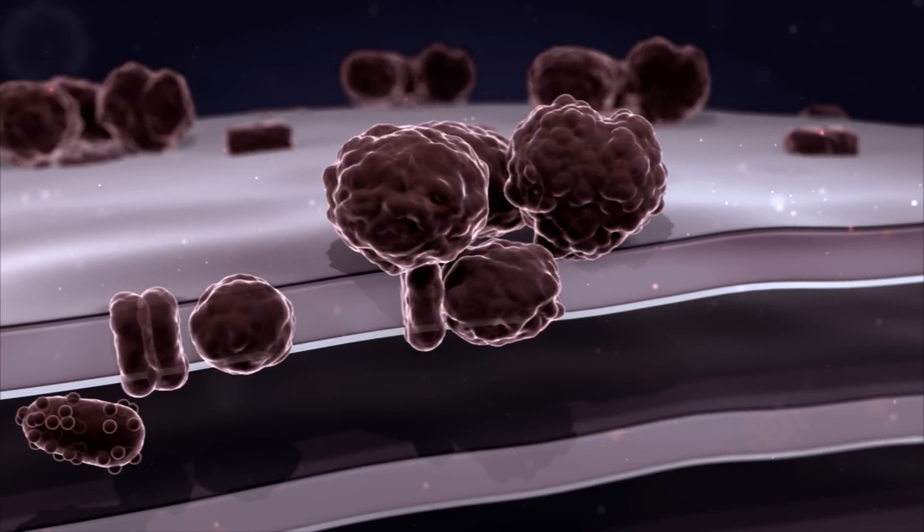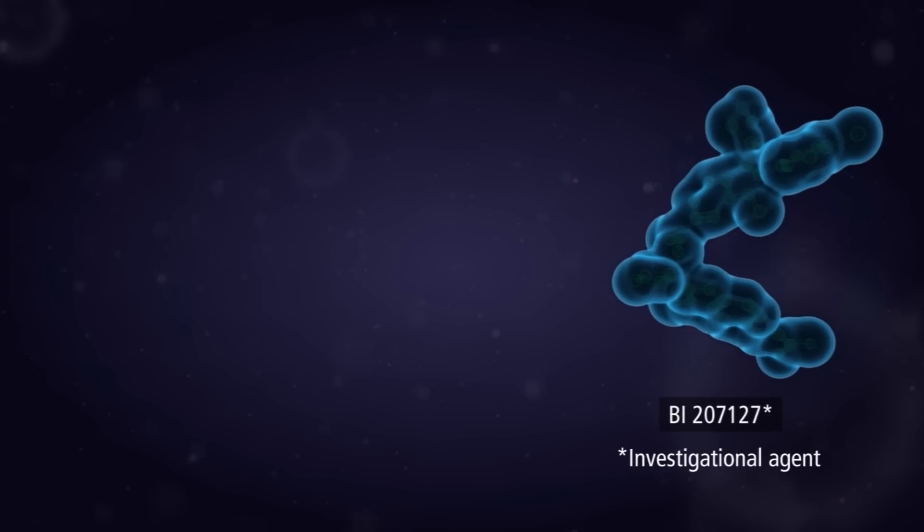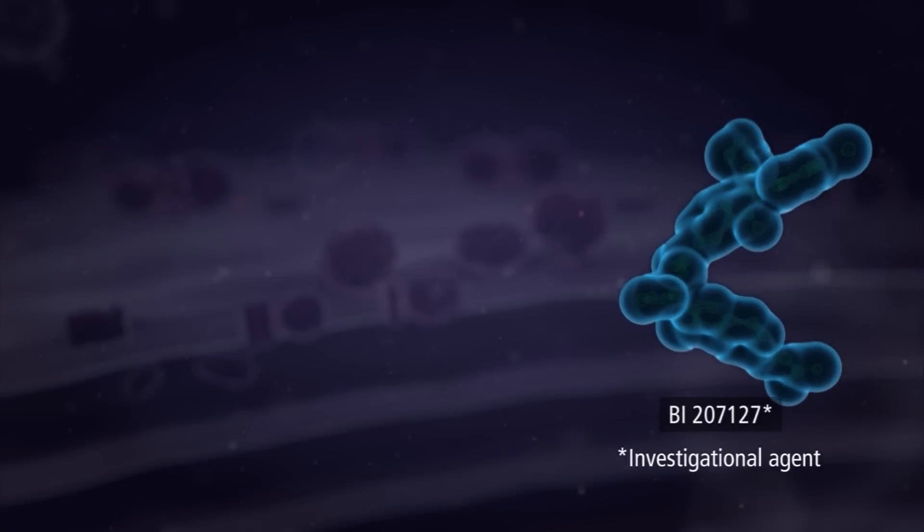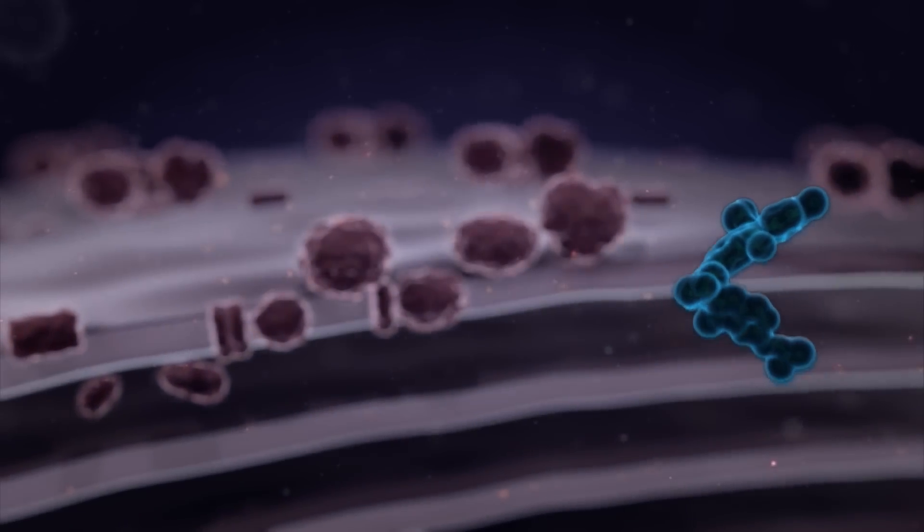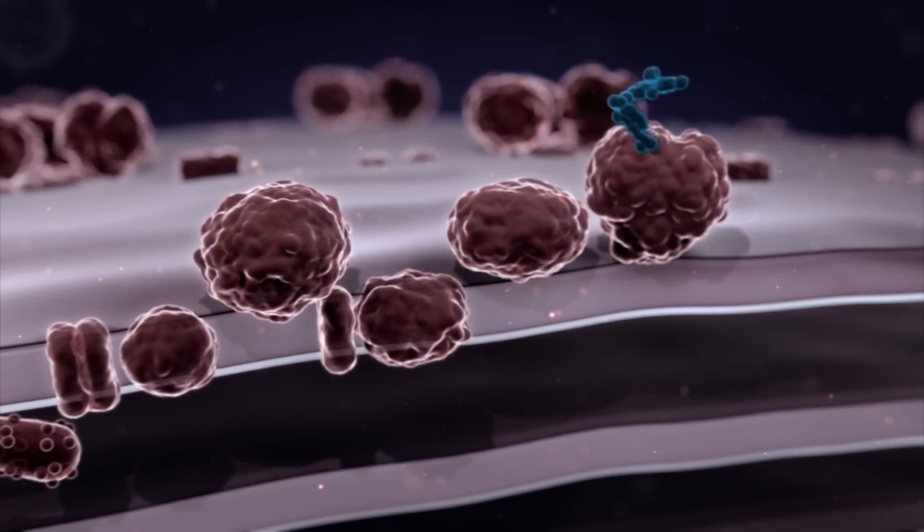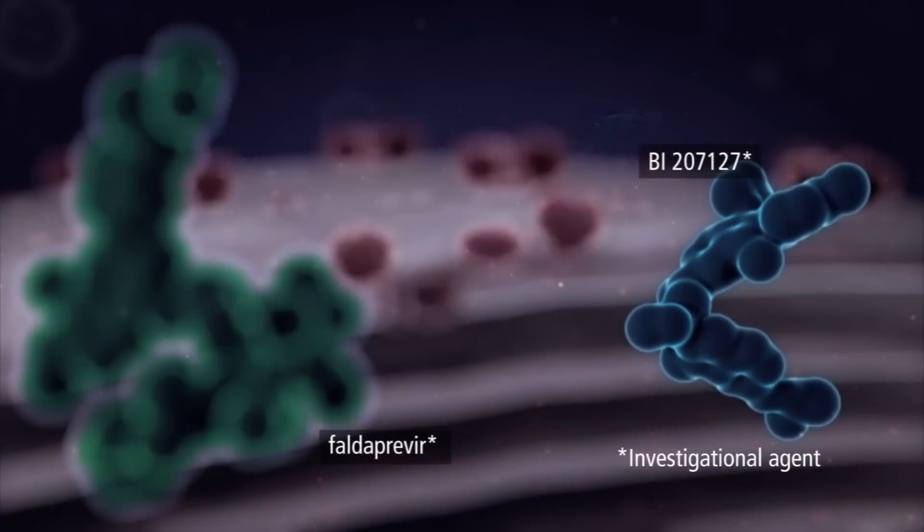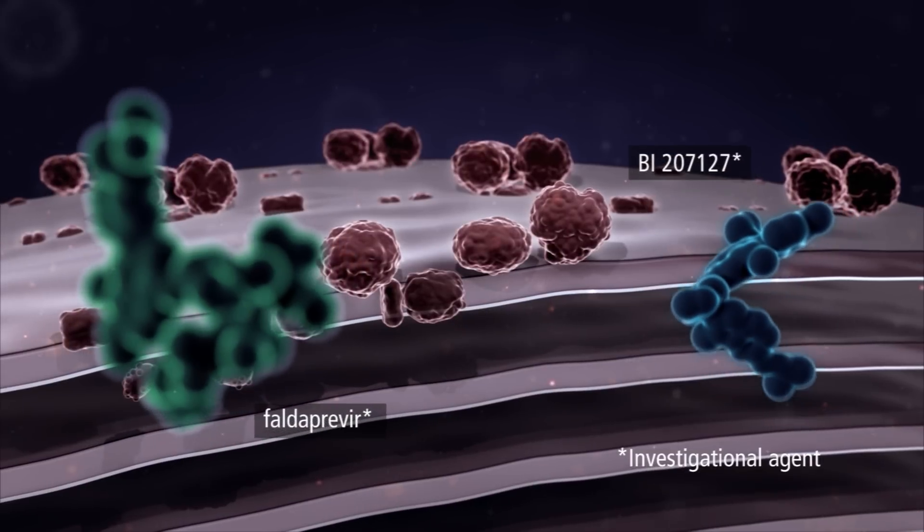There are at least four allosteric binding sites on the polymerase, namely thumb pockets 1 and 2 and palm sites 1 and 2. The investigational agent BI207127 is a non-nucleoside thumb pocket 1 inhibitor. By binding to the thumb pocket 1 site of NS5B polymerase, BI207127 blocks the conformational changes to the enzyme that are necessary for RNA synthesis.